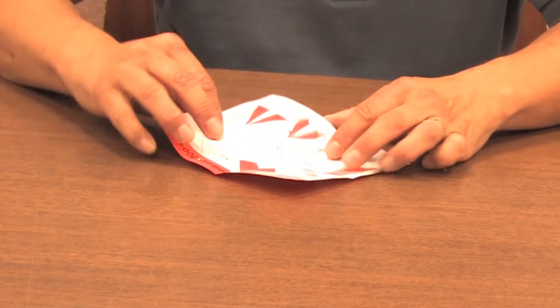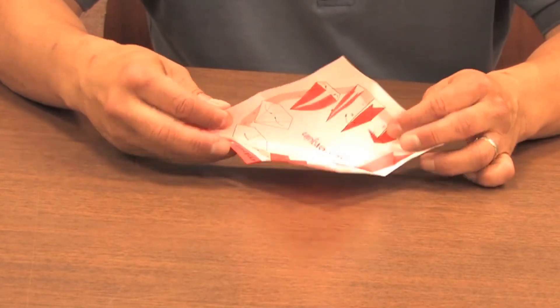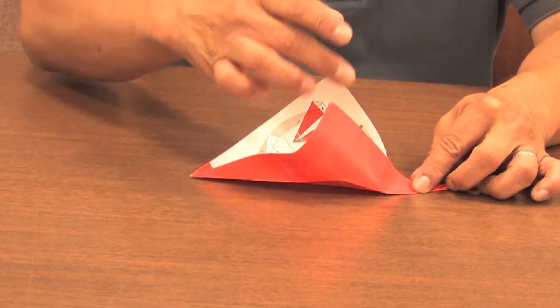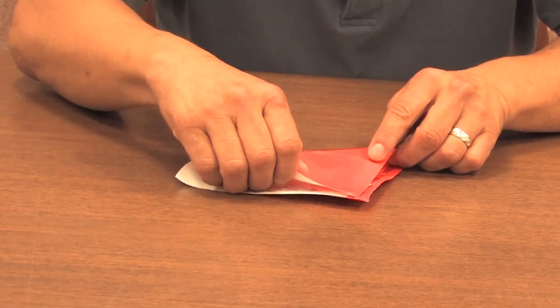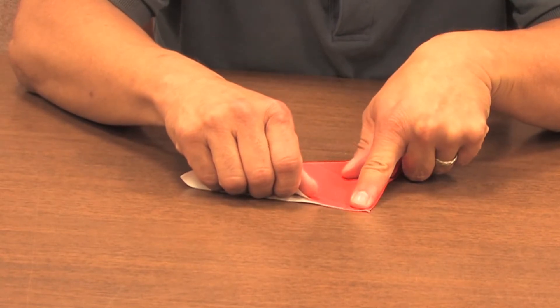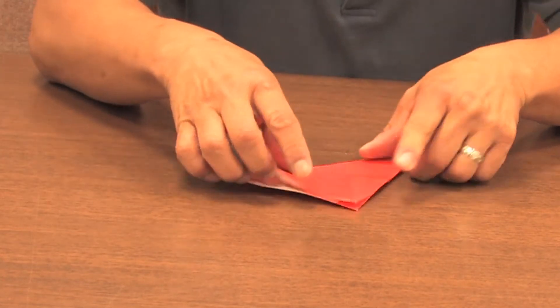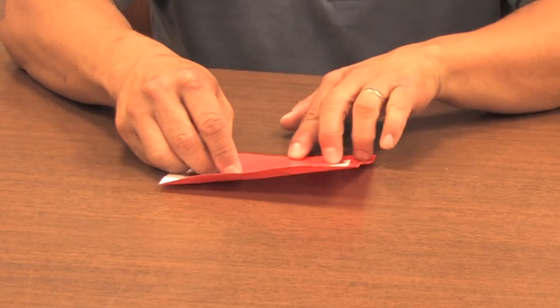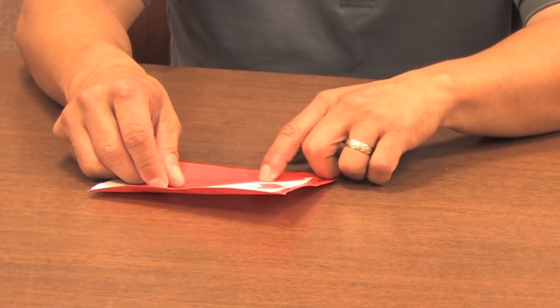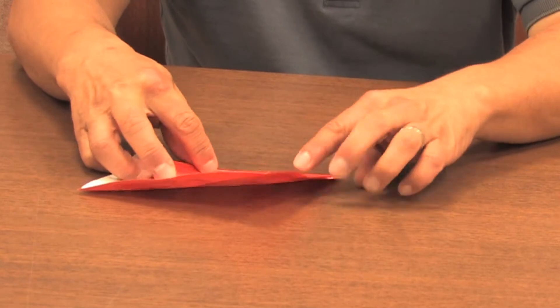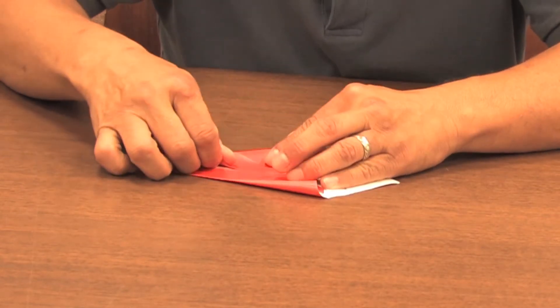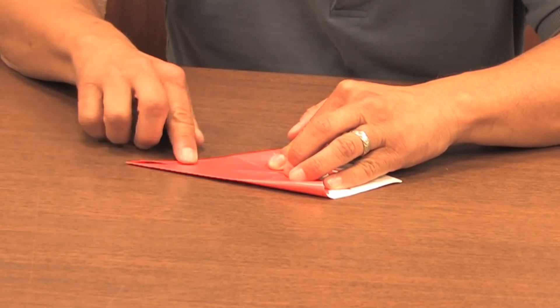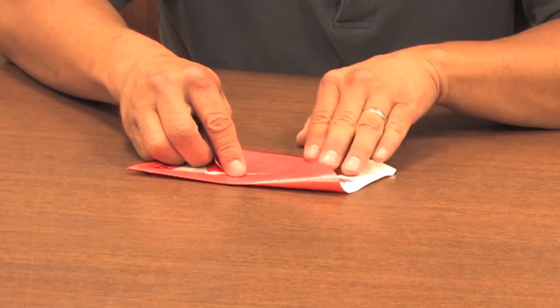Okay. So now we did the diagonal folds this way. We're going to do the same thing on the other two corners. So first make it into a triangle in that direction. And then make the kite shape. It actually only has to go up to where these lines meet here. It's about midway along that crease.